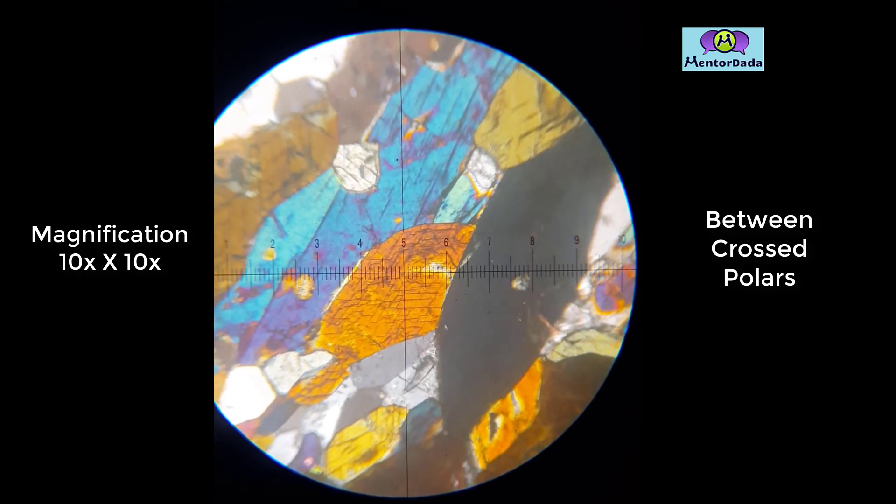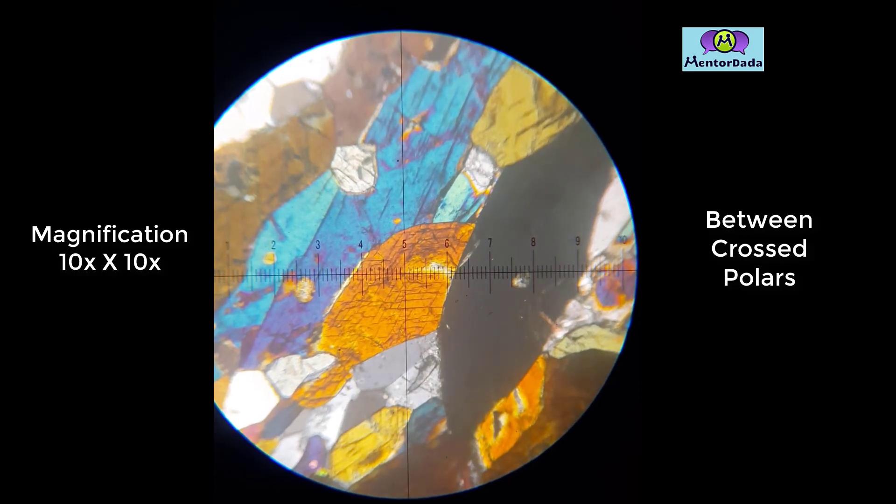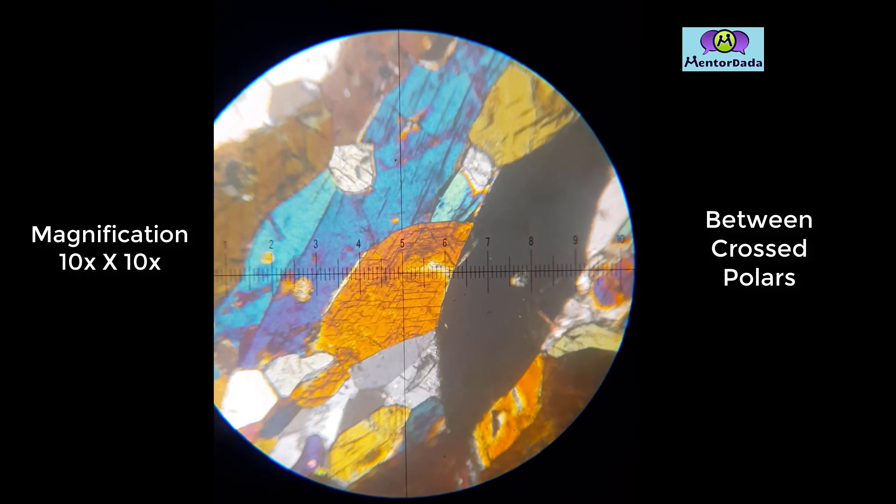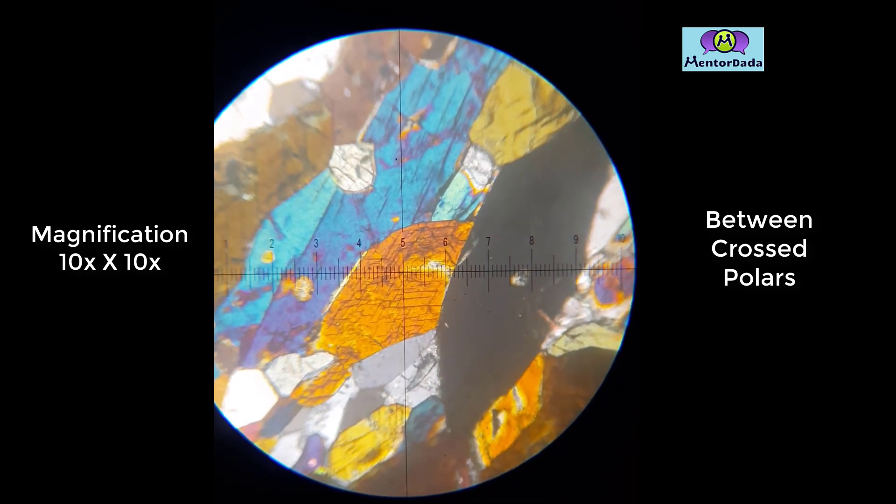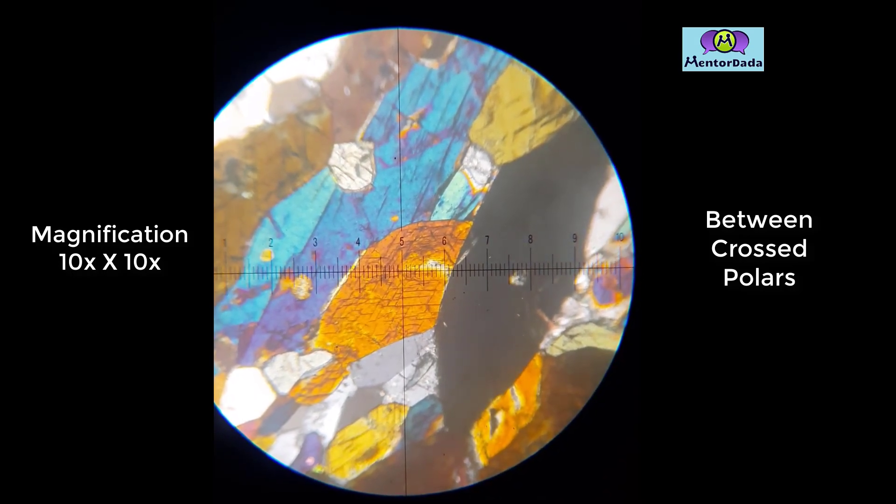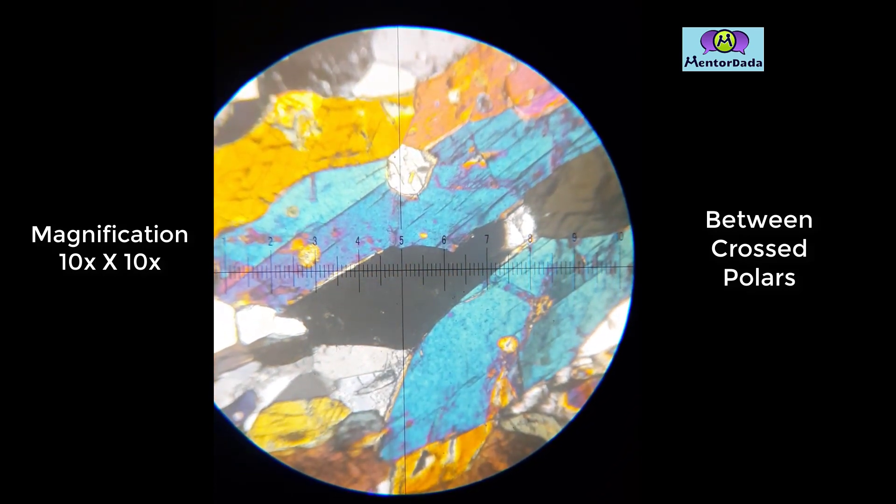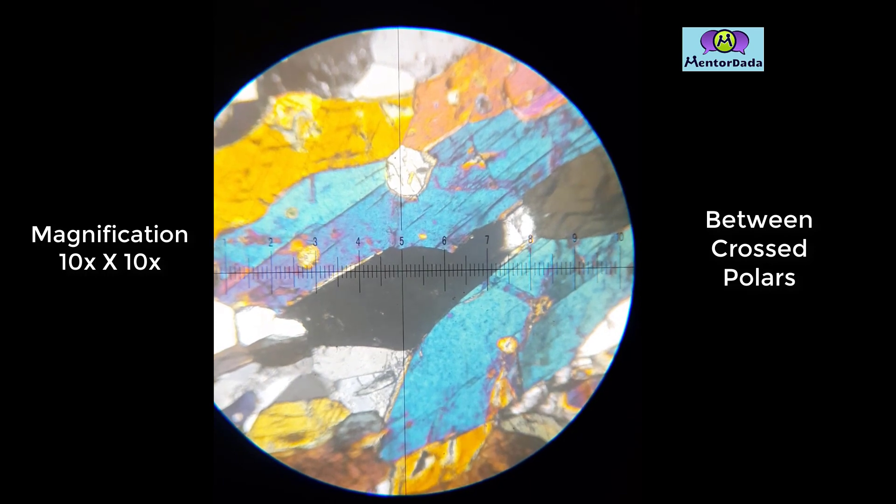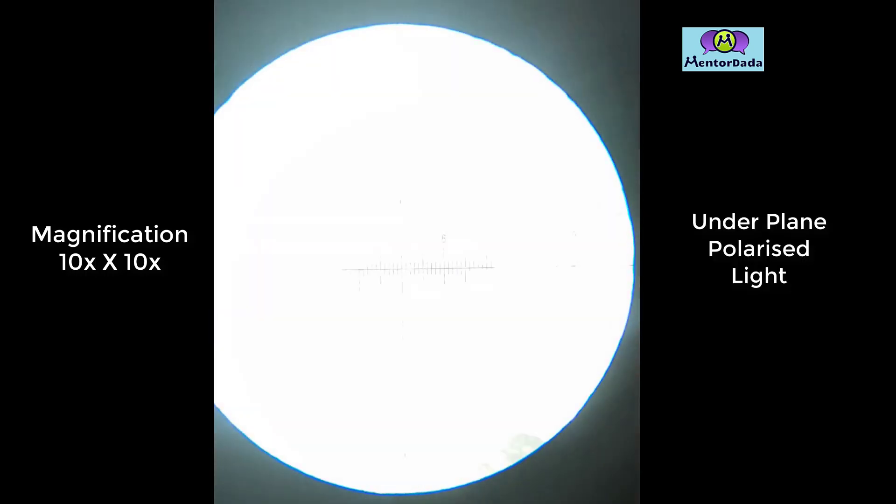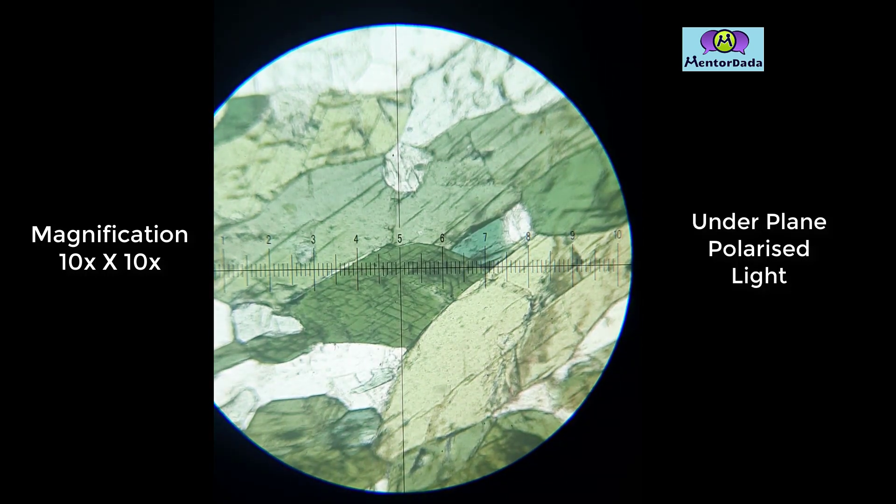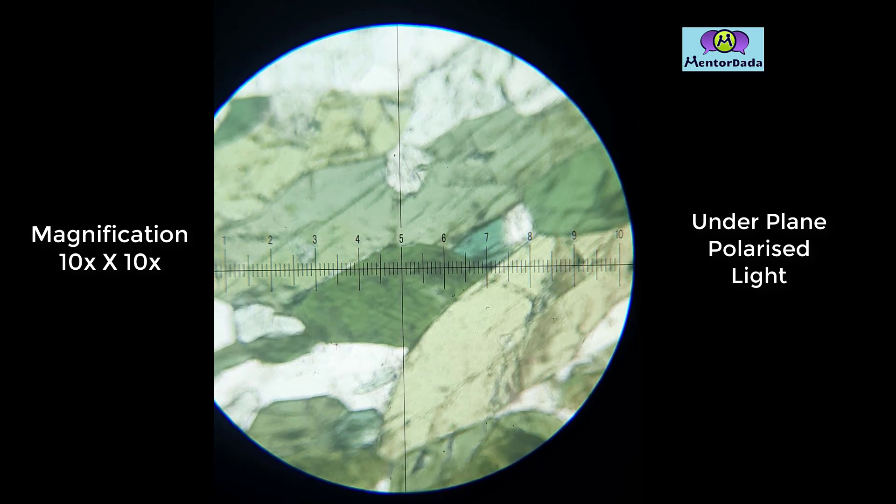As we are rotating the stage, the mineral is getting extinct. At this situation, the cleavage planes are making an angle with the polarizer direction.